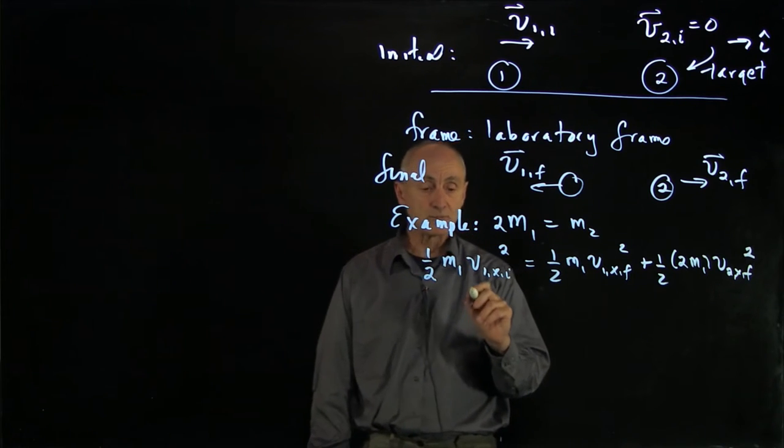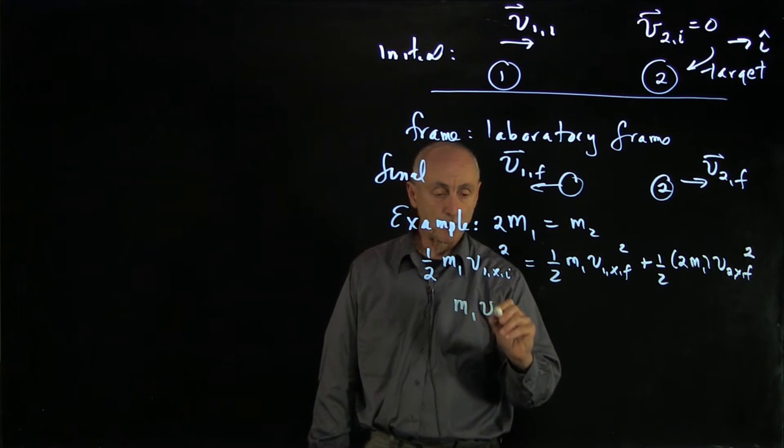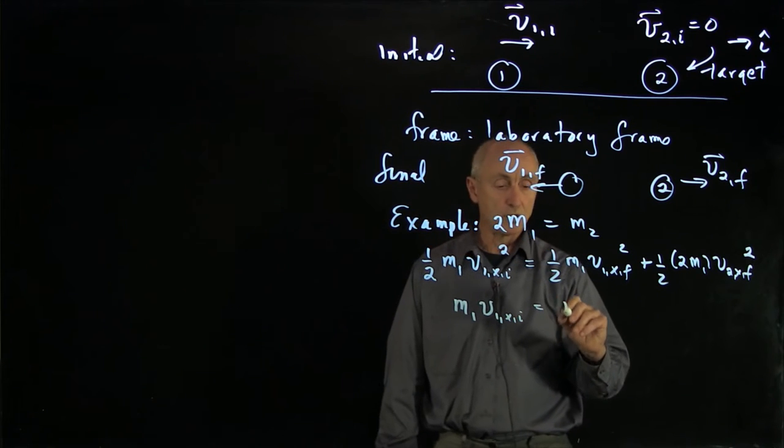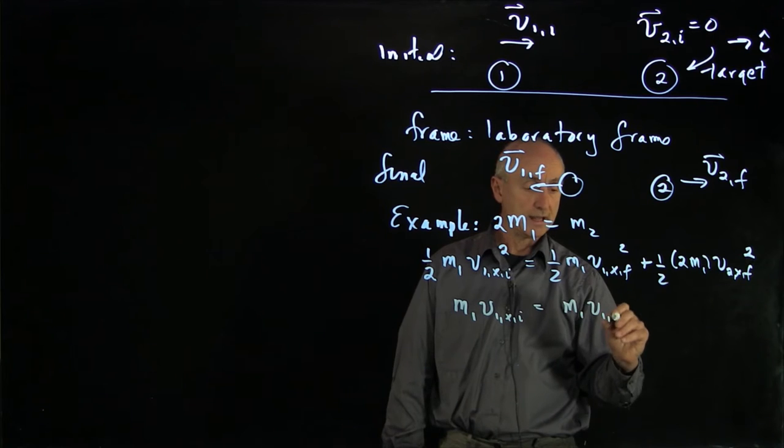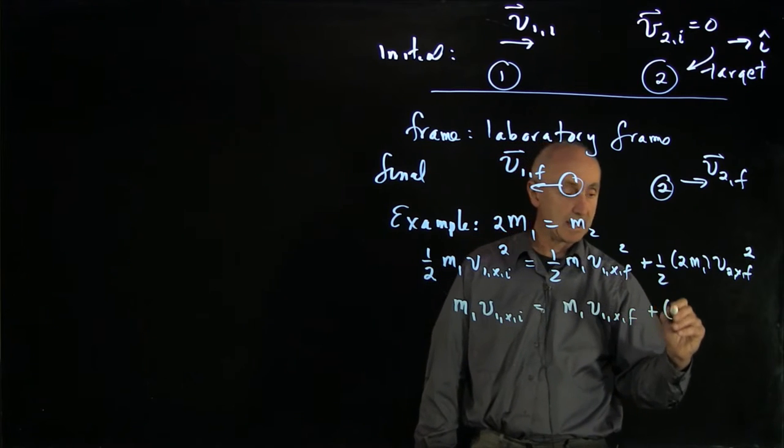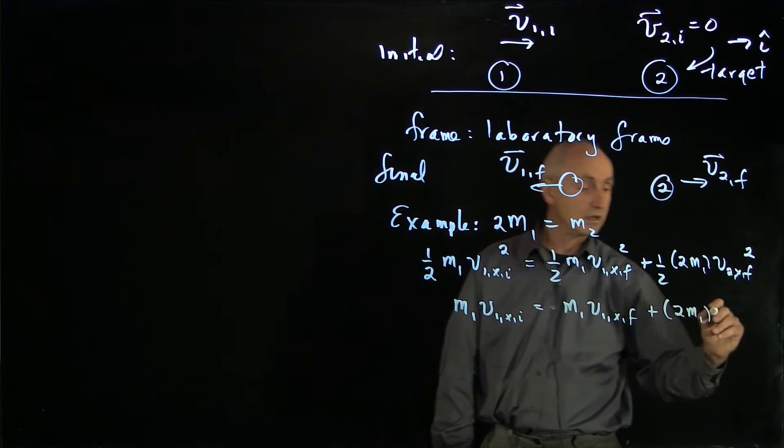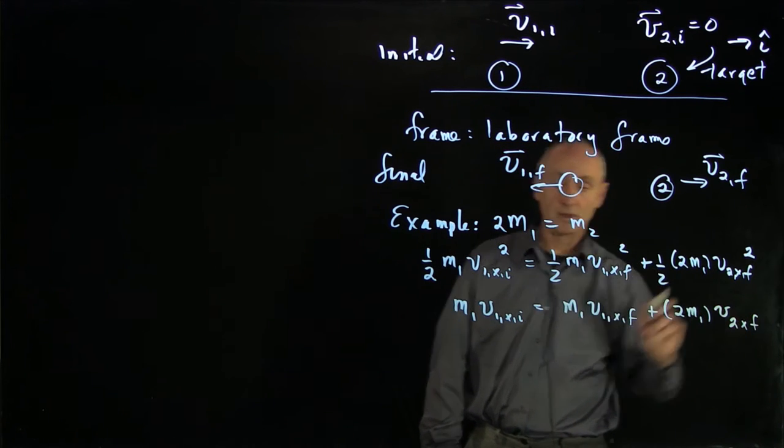Then our momentum condition is that the incoming momentum m1 v1x initial is equal to the outgoing momentum m1 v1x final. And again, I'm going to substitute for m2. That's 2m1 v2x final.